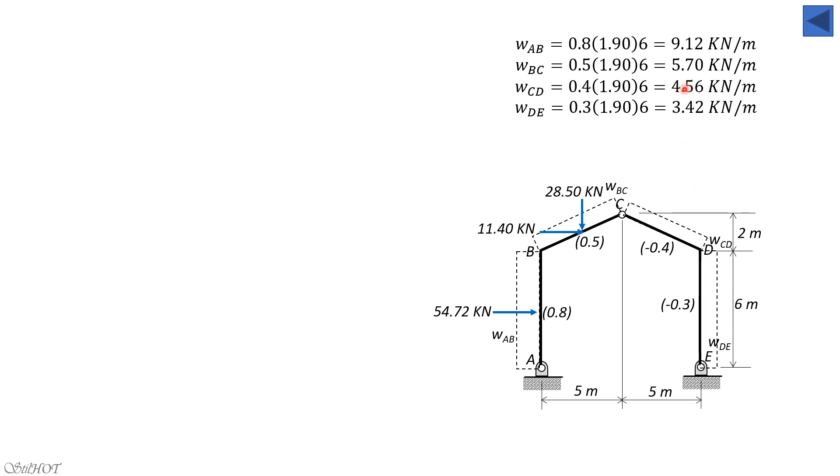For CD, we have away or rightward because it is vacuum or away. So 4.56 times 2 is 9.12 rightward. Then upward, 4.56 times horizontal projection 5 is equal to 22.8 kilonewtons. Then finally we have 3.42 times 6, away, that's 20.52 kilonewtons.